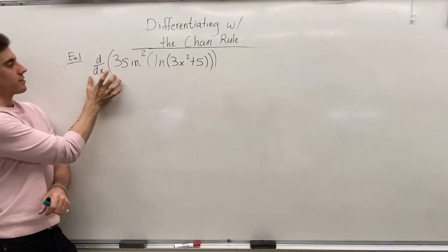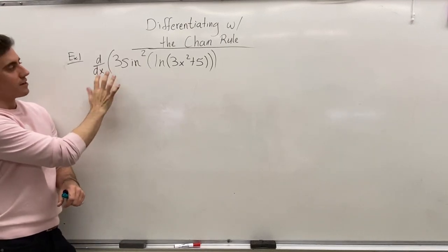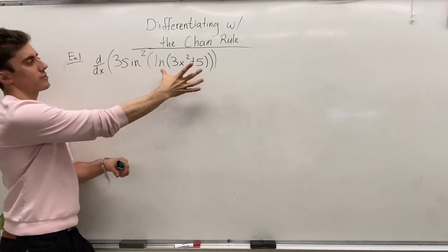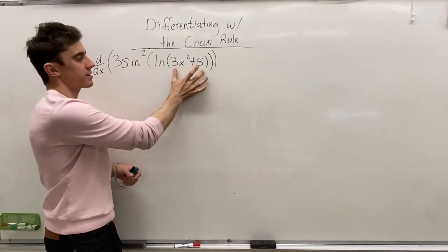So, we're going to look for the derivative d/dx of 3 sine squared of the ln of 3x squared plus 5.